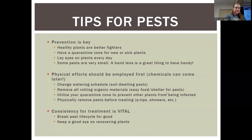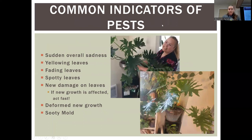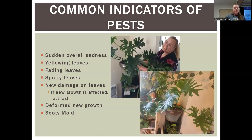Keep a good eye on recovering plants because it is possible for them to be reinfected even if you've done everything right. Common indicators of pests: keep an eye on your plants every day. You may see a sudden overall sadness — drooping, yellowing leaves, fading leaves, spotting, curling leaves, deformed new growth, or a dusty sooty coating. This plant here, our Angeli Calder's plant, had some bug problems. As you can see in the photo it's discolored and sad, but after a couple of weeks of treatment it's made a full recovery.